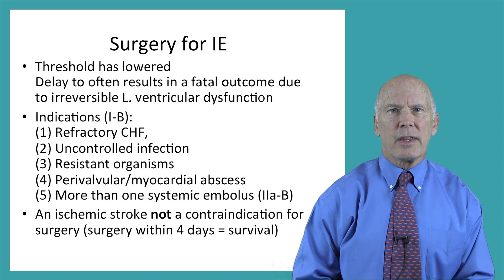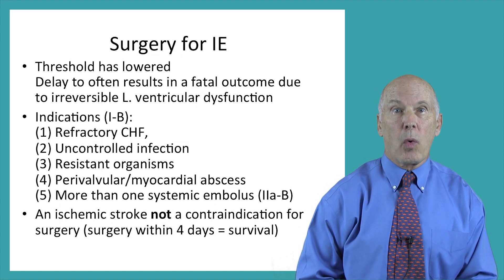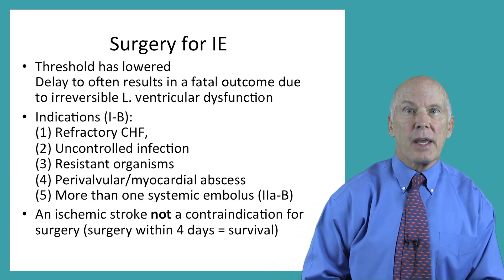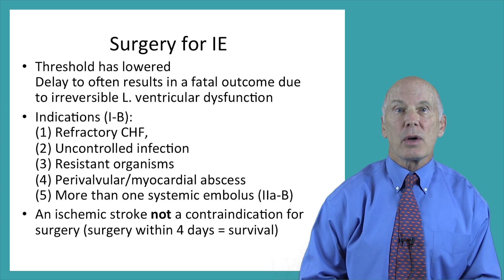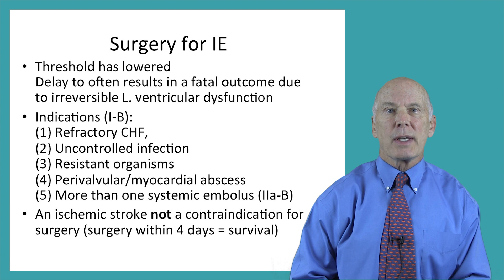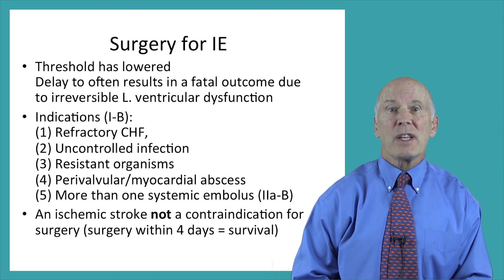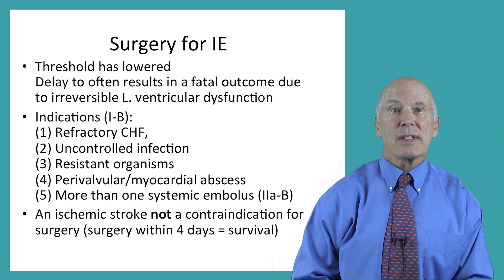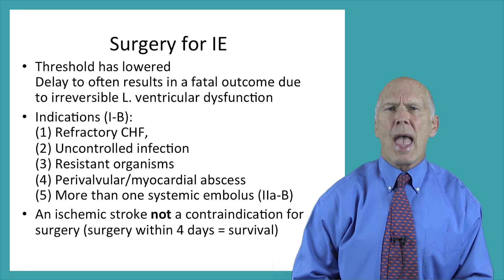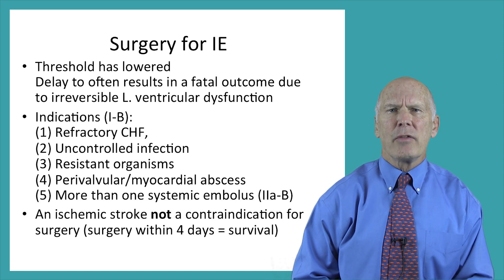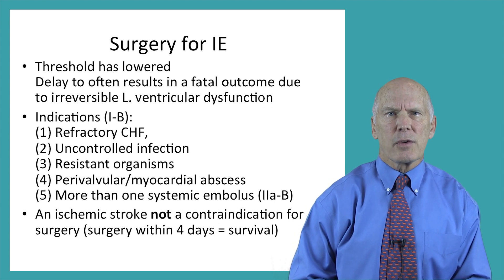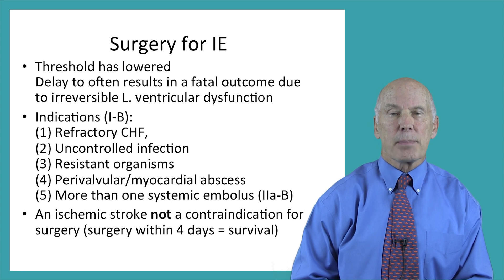Surgery is often life-saving in this disease. The indications for valve repair or replacement — with the exception of the fifth indication — have very strong benefit and reasonable evidence at 1B. Congestive heart failure is an indication for emergent early surgery and has been shown to reduce mortality. Uncontrolled infection, where blood cultures remain positive for greater than five to seven days, is another indication. A fungal or antibiotic multi-resistant pathogen such as vancomycin-resistant enterococcus or multi-resistant gram-negative bacilli is a third indication. A perivalvular leak or myocardial abscess is the fourth, and more than one systemic embolus despite appropriate antibiotics is the fifth indication for surgery.